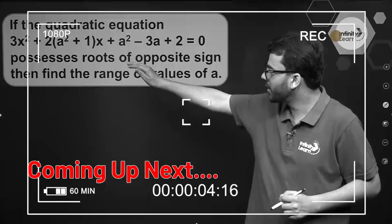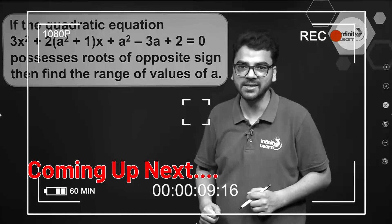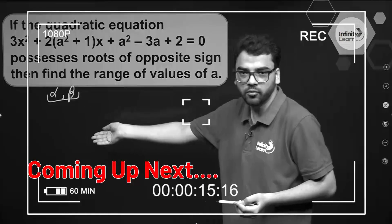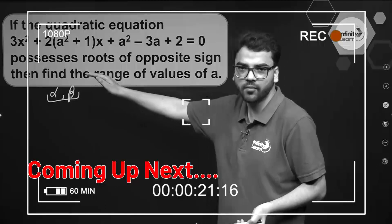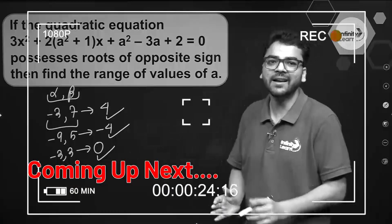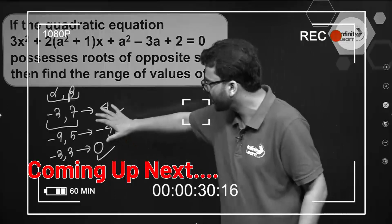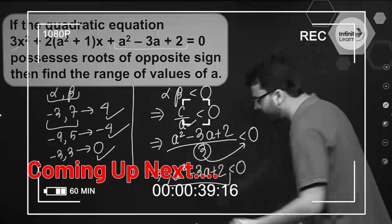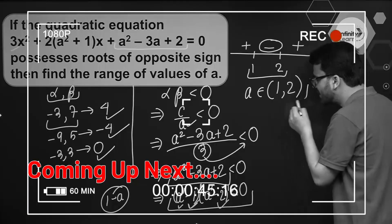Hello everybody. We have a quadratic equation in which it is given that the roots are of opposite signs, and we have to find the range of values of A. This is a complex quadratic equation because it is only mentioned that the roots are of opposite signs — not about their magnitudes — so you are not sure whether the sum is positive, negative, or zero. The answer is that A will belong to the range 1 to 2.